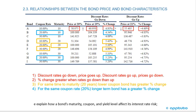To recap: discount rates go down, prices go up; discount rates go up, prices go down — rule one. Rule two: the percentage change is greater when rates go down than up — the convexity effect. Rule three: for the same time to maturity, a lower-coupon bond has a greater percentage change. Rule four: for the same coupon rate, a longer-term bond has the greater percentage change.